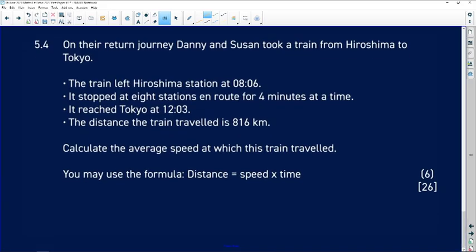We are asked to calculate the average speed at which this train traveled. The nice thing is that this formula is already given to us, but we are asked to calculate the average speed when we're given a formula for distance. So we need to be careful in terms of what we are doing here.